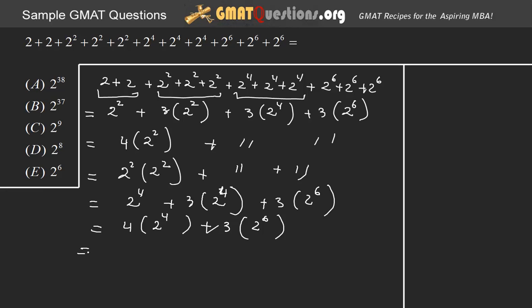We're almost there. So, I will not do this again. I don't want to waste any time. This 4 is equal to 2 squared. So, 2 squared times 2 to the power of 4 is just 2 to the power of 6. Plus 3 times 2 to the power of 6. It's like we are repeating the same thing over and over again.